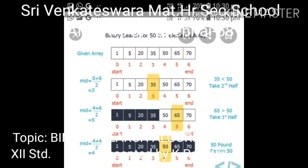First, you find the mid value of the array. The first index is 0 and the last index is 6, so 0 plus 6 divided by 2 equals 3. This is the divide and conquer method — you always divide by 2. So the mid value is 3, and index 3 contains 35. Since 35 is less than 50 (your search element), it automatically skips the left half of the array.